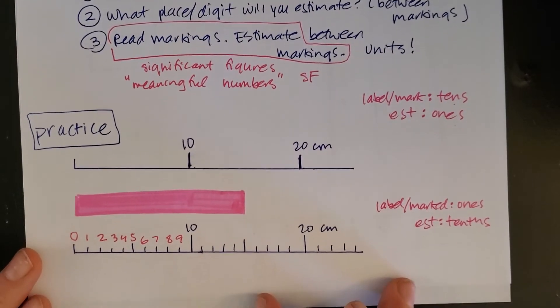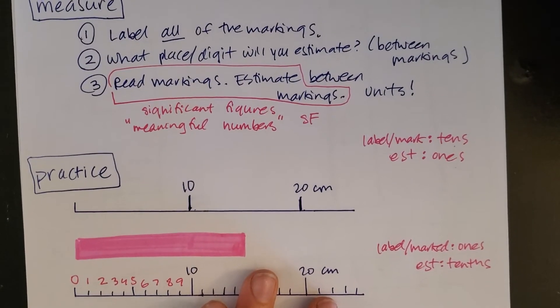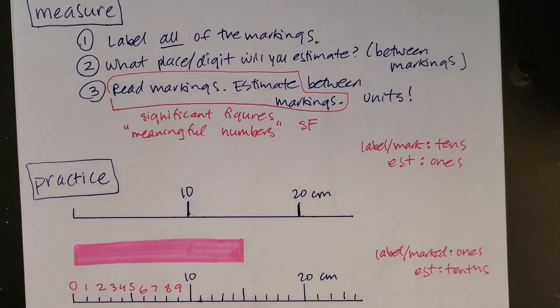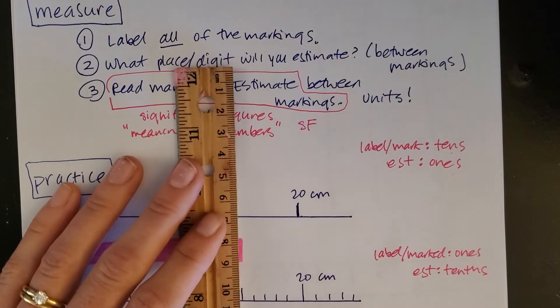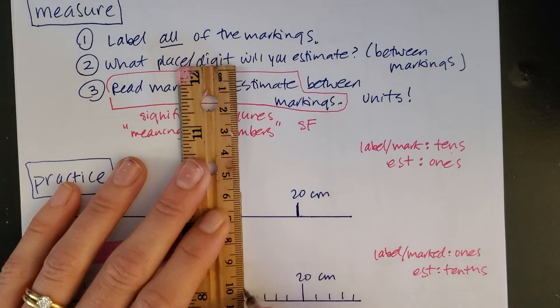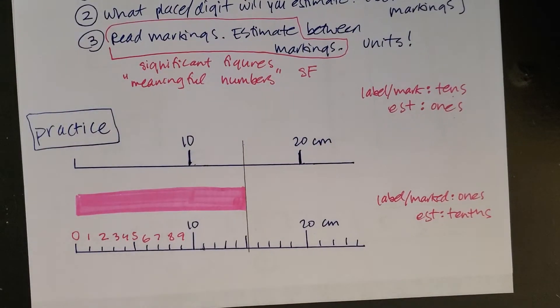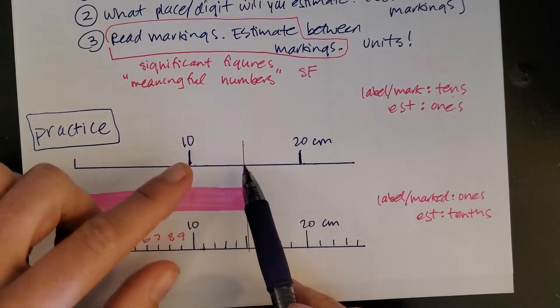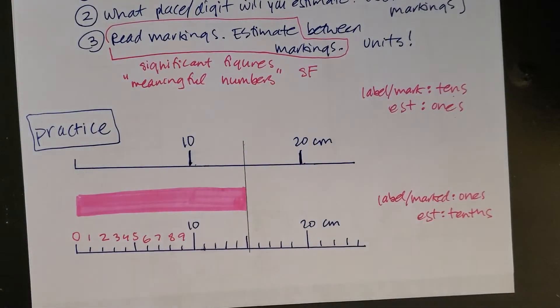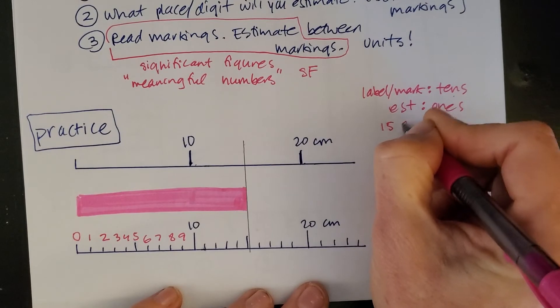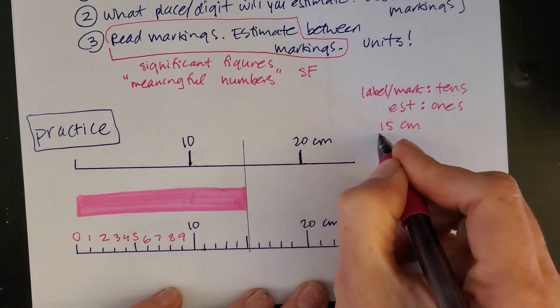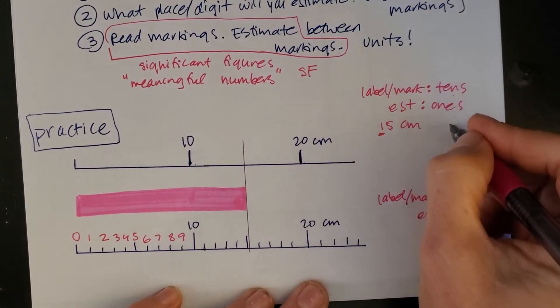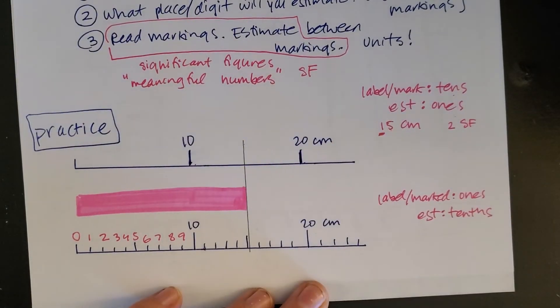So let's take a look down here to practice these two and just get a sense of what this label looks like. What place or digit are we going to estimate? We already figured that out, so when I go to read, I'm going to get maybe a straight edge to figure out where this pink object falls. So as I look at this, I want to read first what's marked, so I know it's more than 10. And then I look and I say, oh, it's about halfway between 10 and 20. So I might say for my measurement that I think this is 15 centimeters. This one I'm confident in, this five I'm pretty confident in, but it is still an estimate. This, I would say, is two significant figures. I've got two digits that I'm measuring there.